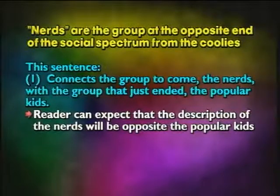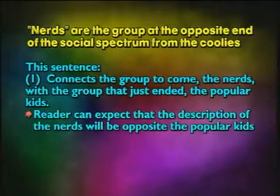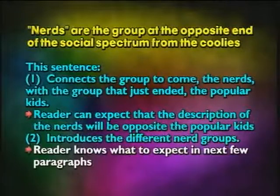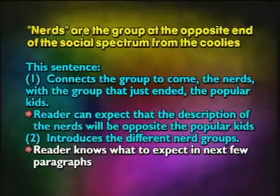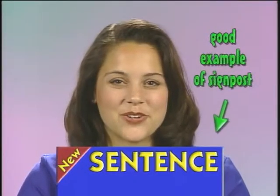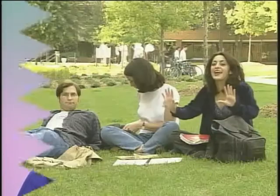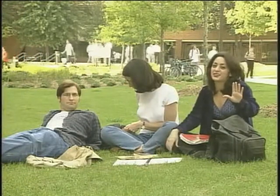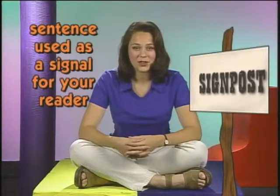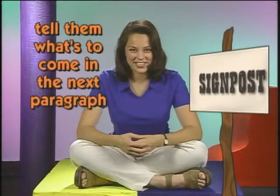So the reader can expect that the description of the nerds will be the opposite of the popular kids. This sentence also introduces the different nerd groups. That way, like the section on the popular kids, the reader knows what to expect in the next few paragraphs. This new sentence is a good example of a signpost for your reader. A signpost is a sentence used as a signal for your reader to tell them what's to come in the next paragraph. Sentences such as these are known as transition sentences.